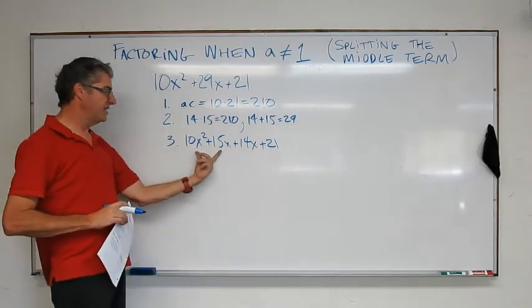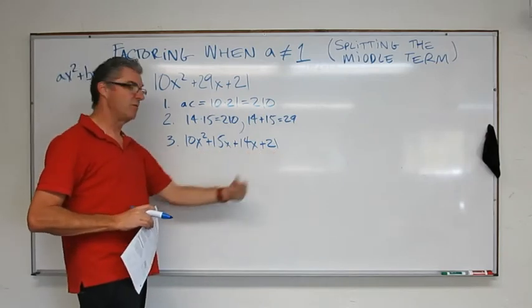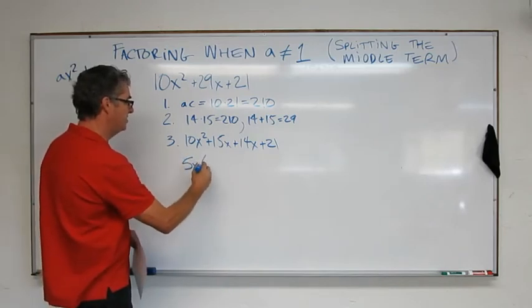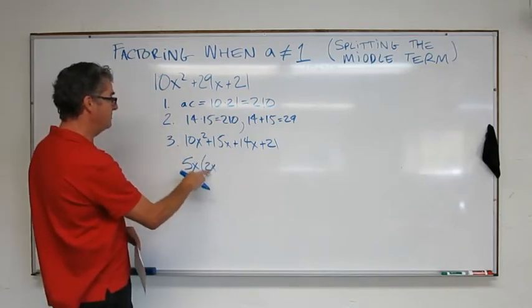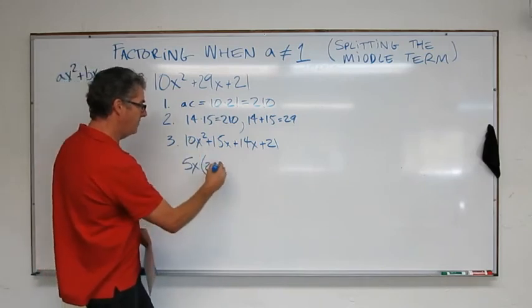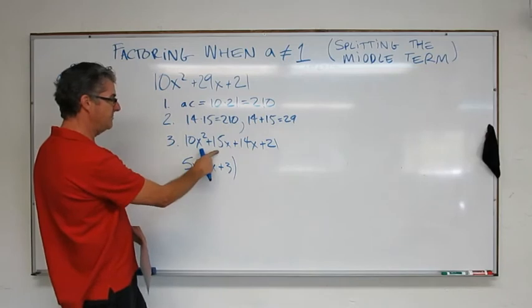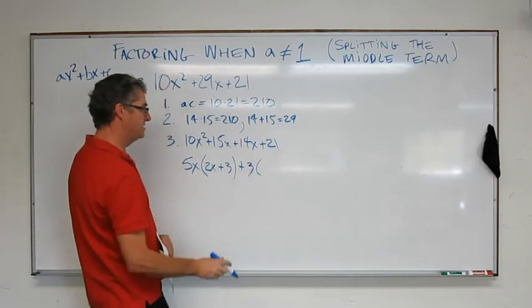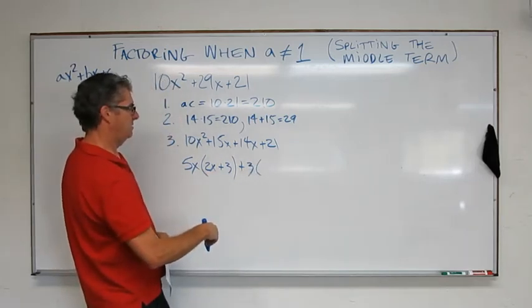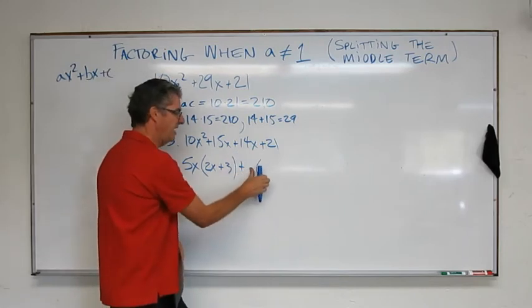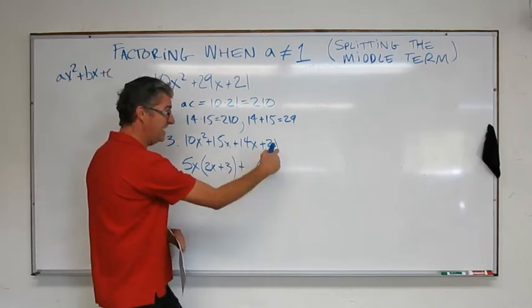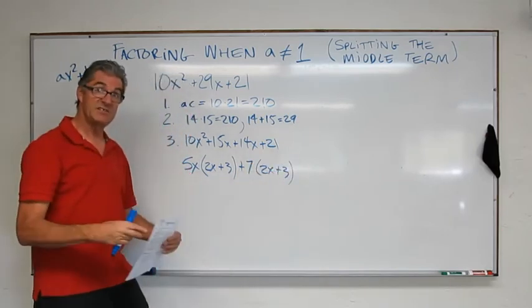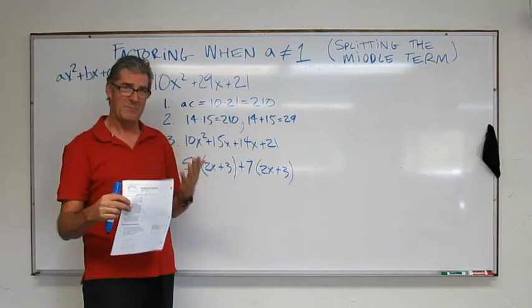So now we're going to take the greatest common factor out of these two and out of those two. Let's see what we get. So I got a 5x in both of those. 5x times 2x. That would get me 10x squared and then plus 3 because that would get me back to my 15x. And then over here, I have a 3 in both of those. So that's going to be 3 times... Oh, wait a minute. That's wrong. I said 3 before. It's a 7, right? There's a 7 in both of those. 7 times 2x plus 3. Everybody makes mistakes. The important thing is how to recover and not let it bum you out. And I'm not bummed out.